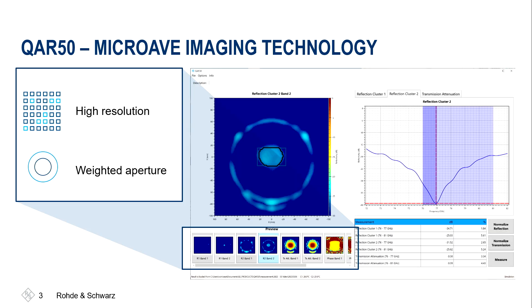For the image post-processing, we can either have the image with high resolution, which is the QAR50K30, or we can use a weighted aperture — which I explained in a previous video — in order to capture accurate results.